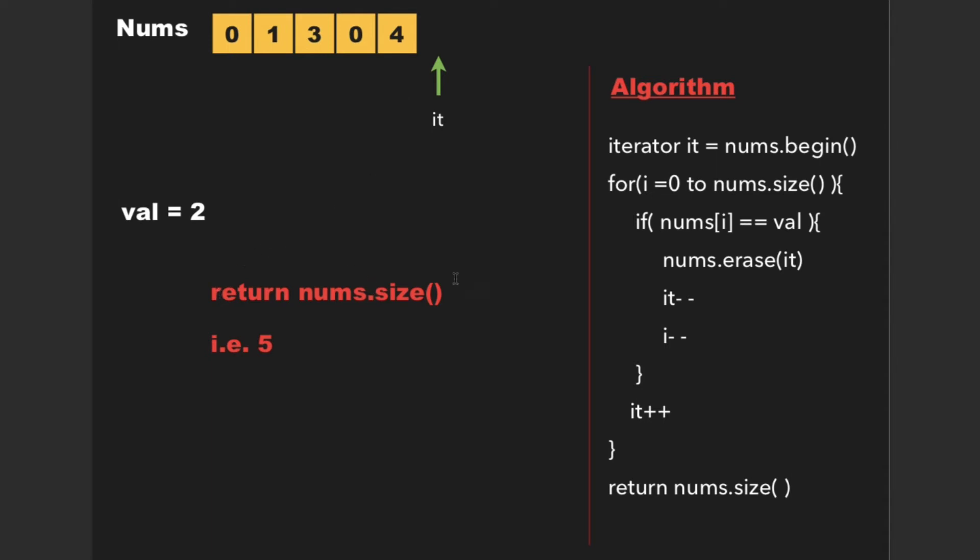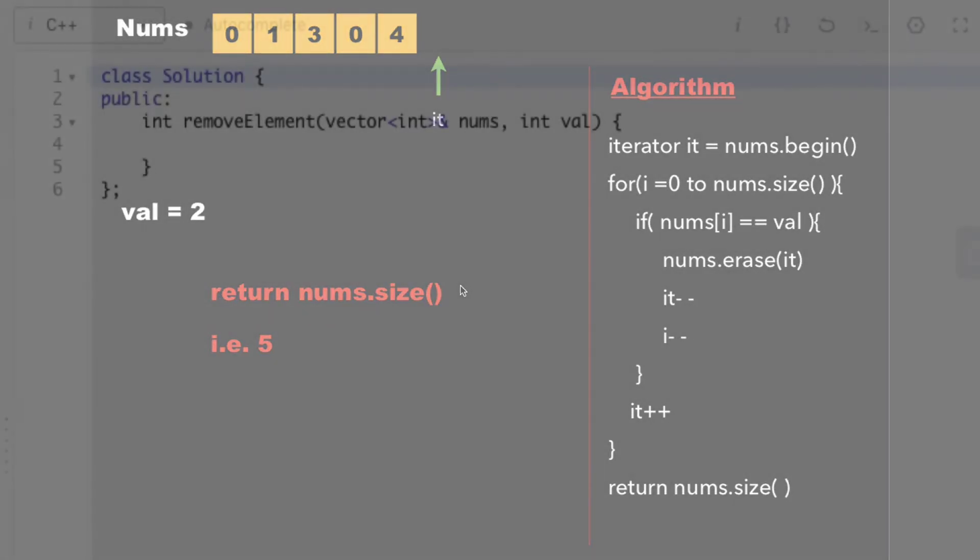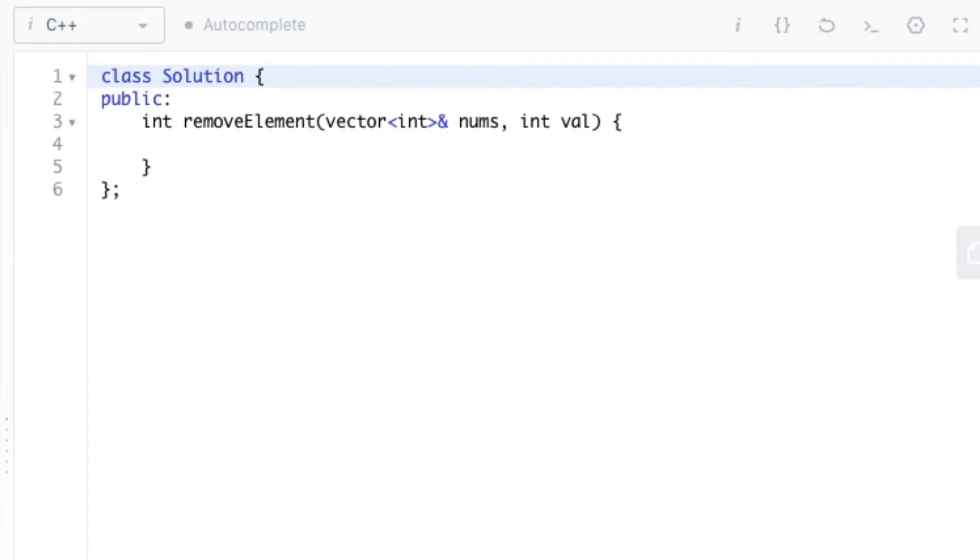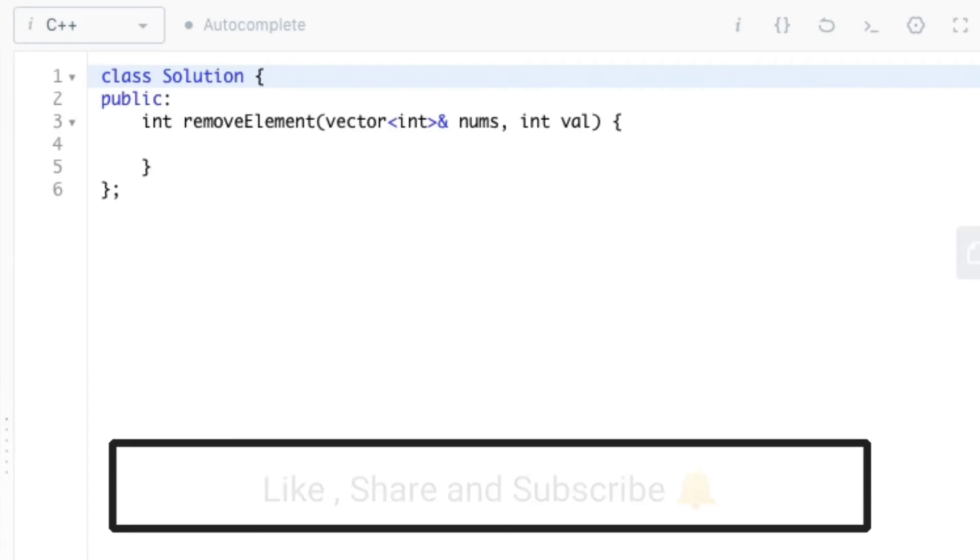whose size is 5, so we can return nums.size, that is 5. So now we can begin with the code, which is quite simple. Initially, we need to create an iterator and point it to the beginning of nums vector.